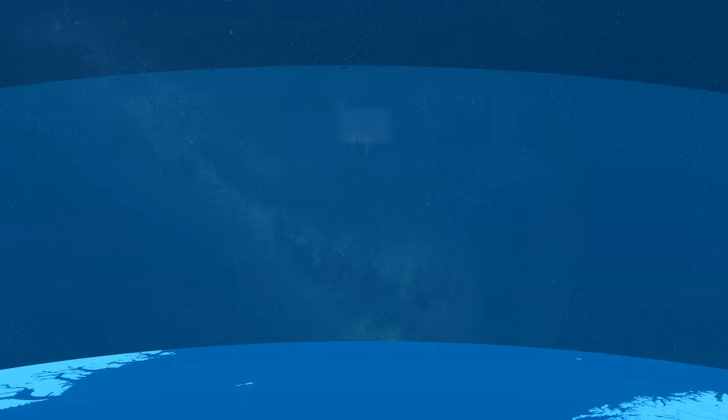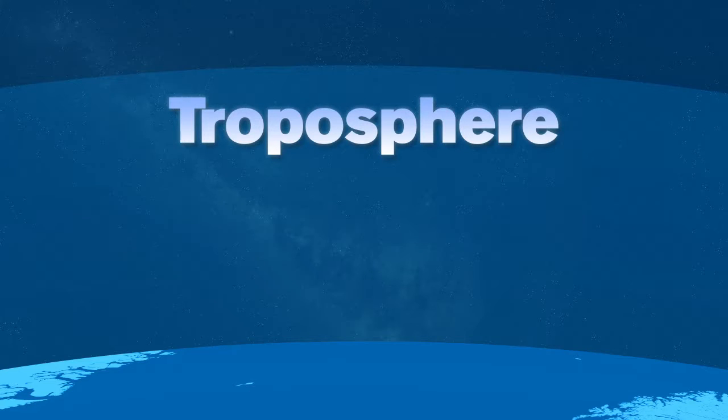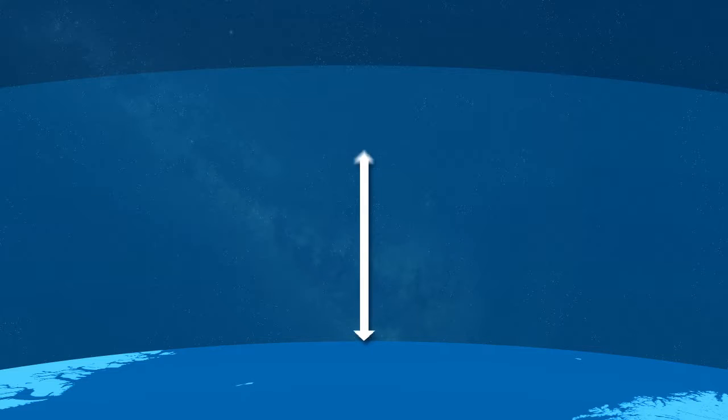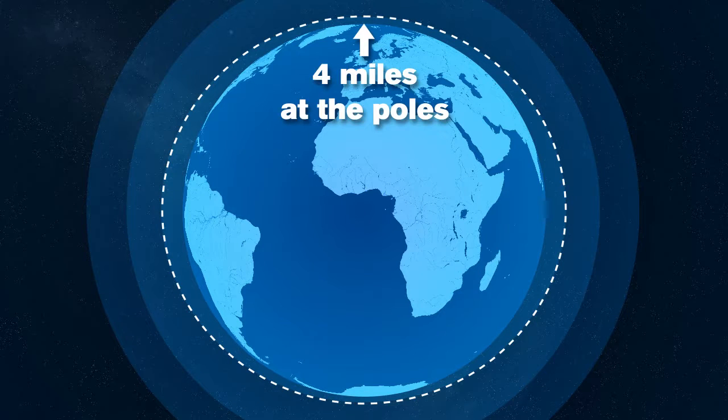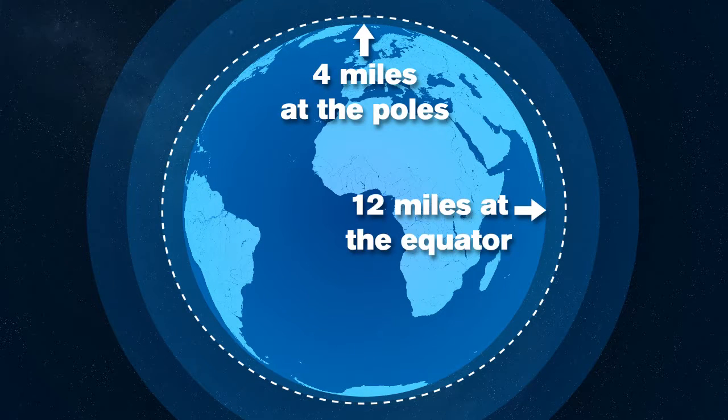The lowest layer of the atmosphere is called the troposphere. This is where almost all weather occurs. The troposphere begins at the Earth's surface and extends to anywhere between 4 and 12 miles high. The varying height gives this layer more of an egg shape with a height of about 4 miles at the poles and closer to 12 miles at the equator.